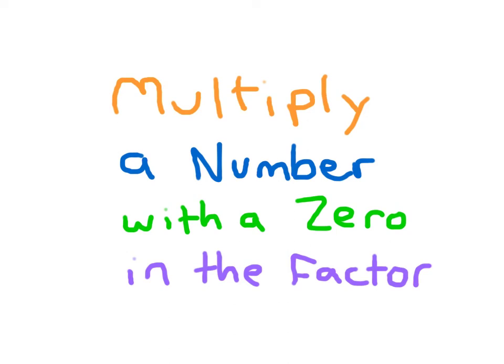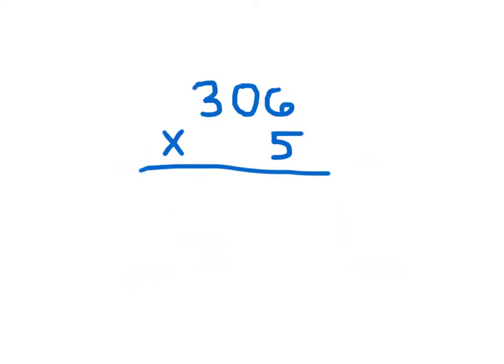In this lesson, we'll learn about multiplying a number with a 0 in the factor. As you see here, with this factor 306, there is a 0 in the factor.